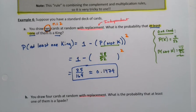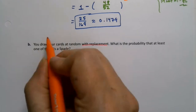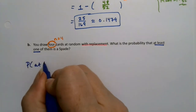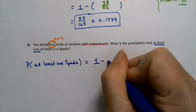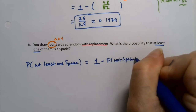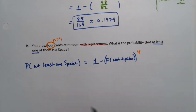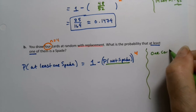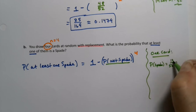Let's do one more practice. This time we're drawing four cards at random — so n equals four — and we want the probability that at least one of them is a spade. The probability of at least one spade equals one minus the probability of not getting a spade, raised to the fourth power. I need to go to the side again to figure out that inner probability.